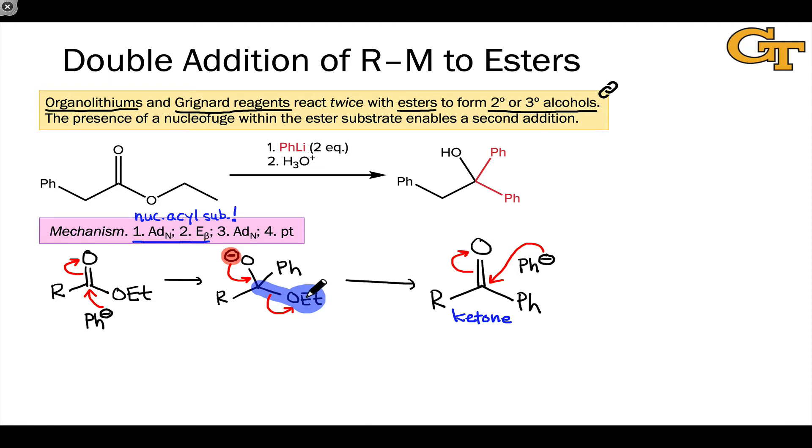Backing up just a little bit, in the previous step, we can see what happened to the ethoxy group. It was kicked off as OEt minus, the ethoxide anion. After this second round of addition, we end up with an alkoxide connected to a saturated or sp3 hybridized carbon. And so beta elimination is no longer possible.